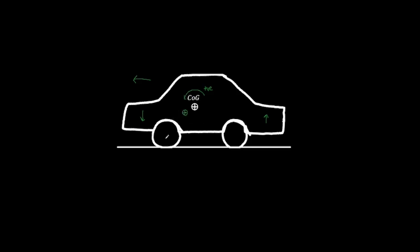If we have the distance from the front axle to the centre of gravity as L1, and then centre of gravity to the rear axle as L2, and if we wanted to find what is the total weight on the front axle, we just put L2 over L. L is L1 plus L2, and then we times that by the mass. That gives us how much weight we have on the front axle. So if L2 increases, we have more of the total mass on the front axle.